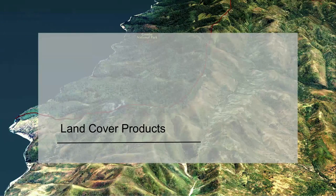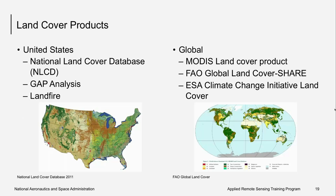Now we'll jump into some of the land cover products that can be used. There are several existing land cover products, including the National Land Cover Database (NLCD), the GAP Analysis Program (GAP), and the Landscape Fire and Resource Management Planning Tools (LandFire) — these are for the United States. For global coverage, there are things like MODIS Land Cover Products, the FAO Global Land Cover, and the ESA, or European Space Agency, Climate Change Initiative Land Cover.